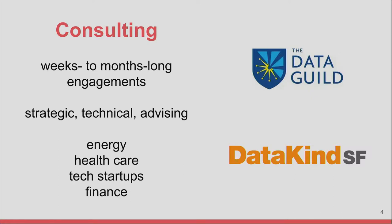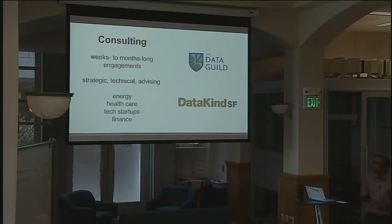I work a lot with DataKind SF, as Deb mentioned as well. This group now has seven locations — Singapore, Bangalore, Dublin Ireland, Washington DC, New York, San Francisco — and we're trying to connect volunteers who have data skills with nonprofit organizations that have some cause and help them using those skills. Outside of that, when working with the Data Guild or as a freelancer, I'm working in energy, healthcare, and those industries have been a focus of mine in the last few years.